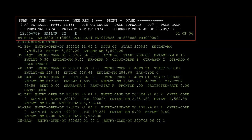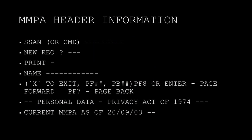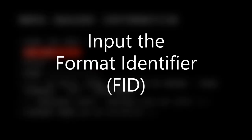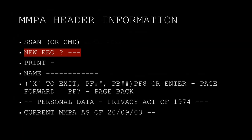The first thing we're going to learn how to read is the MMPA header information. We'll start with the social — that block is the social. The next block is the new request: if we want to switch to a different FID, this is where we input it. The next block is print — honestly, I've never seen this work; it may have worked a long time ago. I use another method to print.